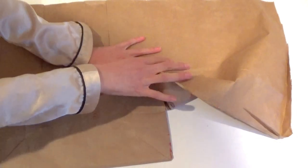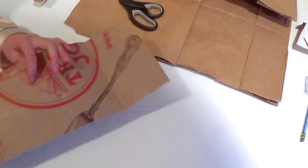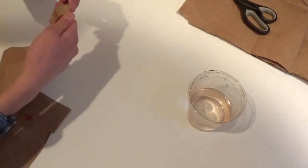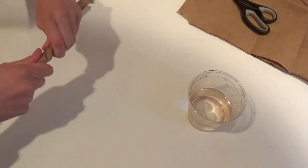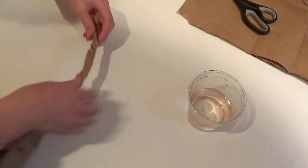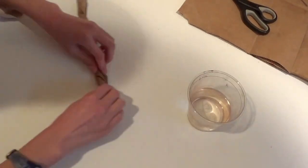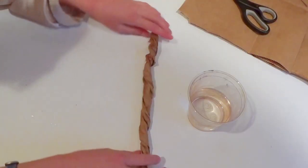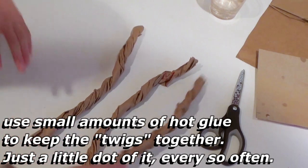Cut open your brown bag and cut a pretty thick strip out of it. With this strip, turn it over and you're going to start twisting it up using little taps of water in a cup as you go. You just want to twist it up to make a twiggy type thing.